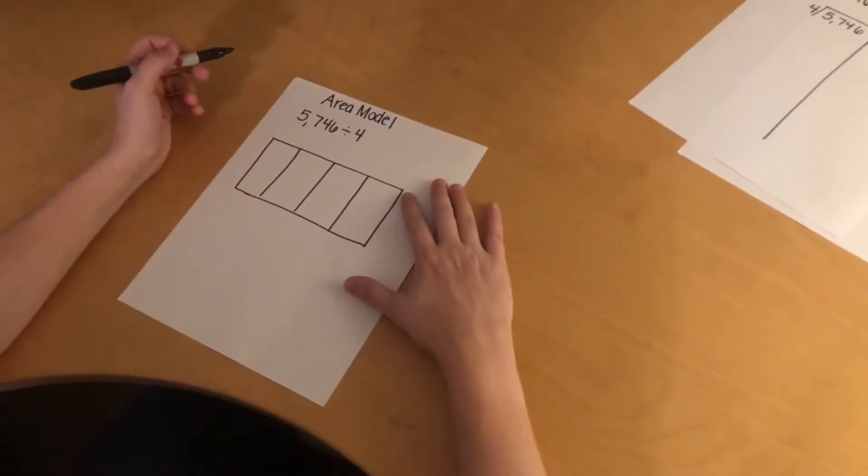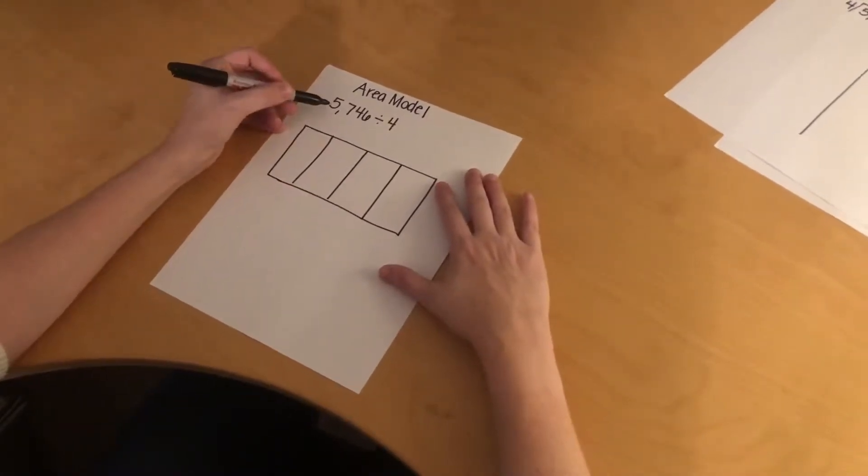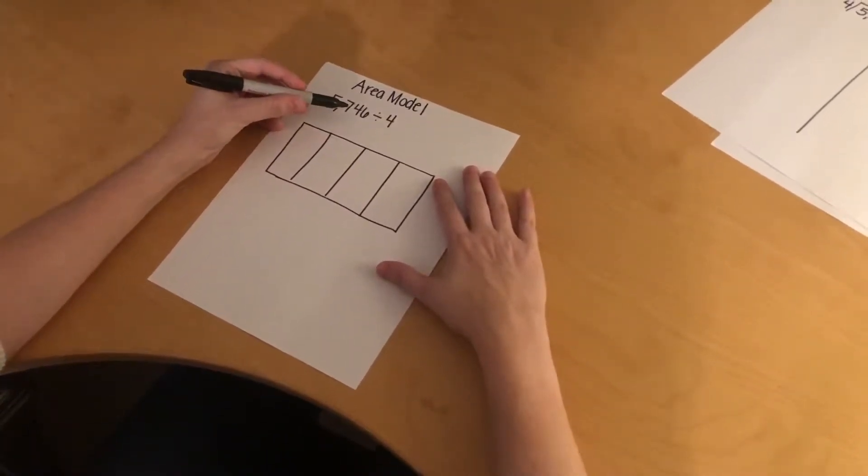Hi guys, I wanted to show you how to use the area model of division to divide. I have the problem 5,746 divided by 4.